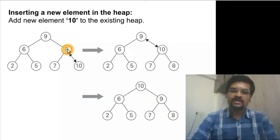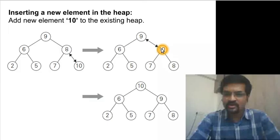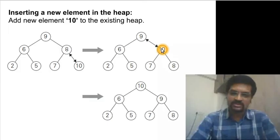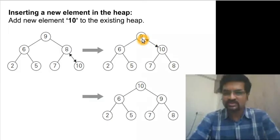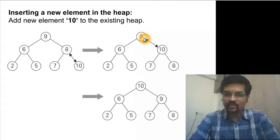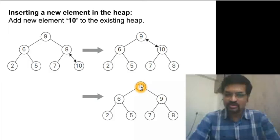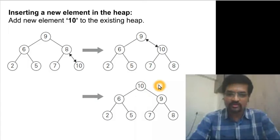Parental dominance is not satisfied, so 8 is pulled down and 10 moves up. Then 10 still needs to check with its new parent — parental dominance is again not satisfied, so 9 is pulled down and 10 goes to the root. At the root it has no parent, so parental dominance is trivially satisfied.